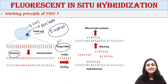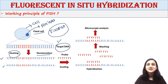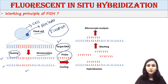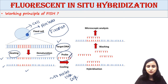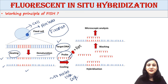Heating mediates denaturation of DNA. DNA is made up of two strands, and after applying heat, denaturation occurs — the two strands are separated. Now we apply a specific probe. The probe is an oligonucleotide sequence, approximately 20 nucleotides in length, and it is attached to a fluorescent dye. It is specifically designed to bind its target.